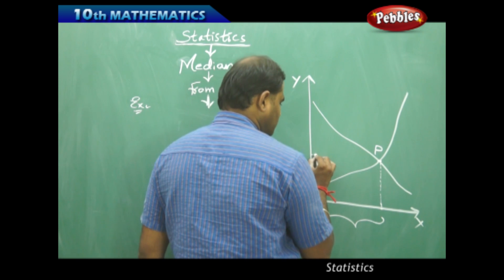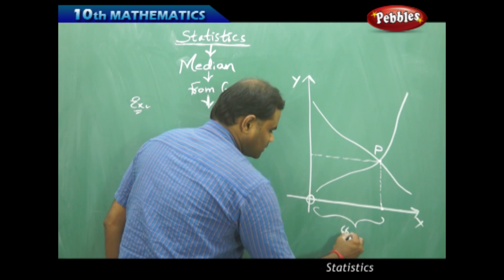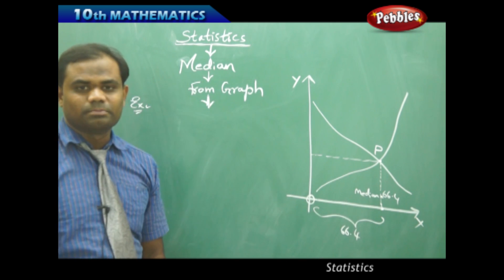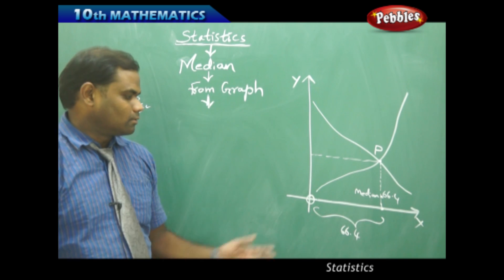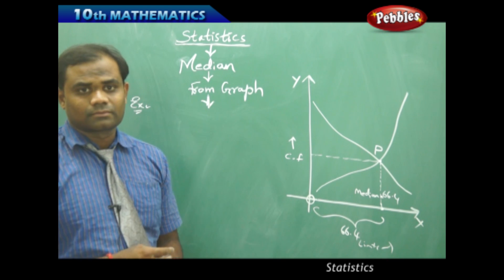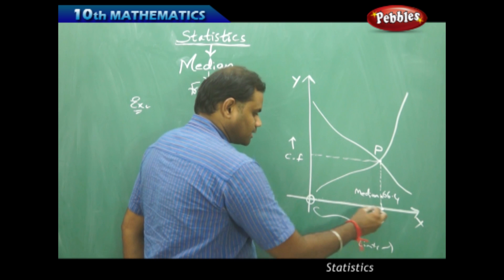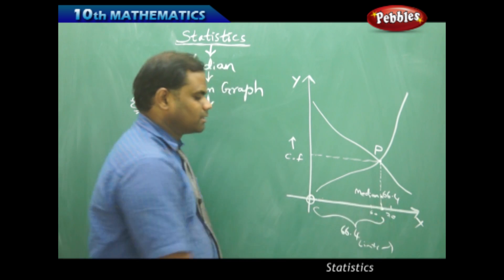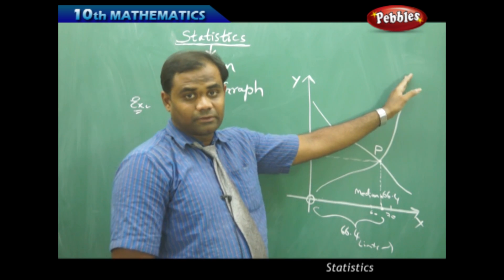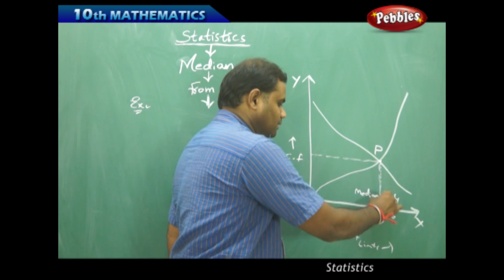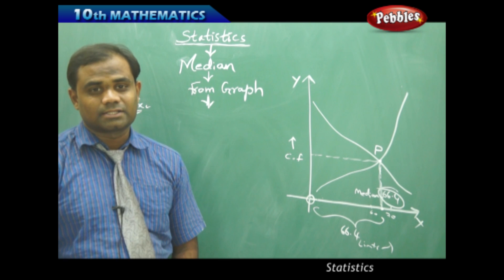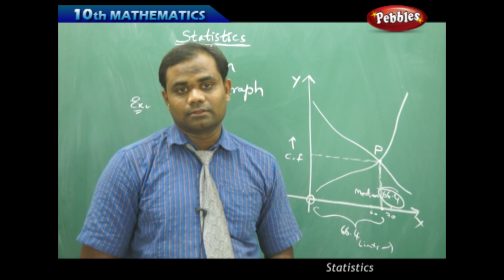Correspondingly, that point has an x-coordinate from which I identify that the median is 66.4. So the median in this case, calculated from the ogive curves using cumulative frequency with limits, is approximately 66.4 to 66.5, taken under the range of 60 to 70. This is how we sketch the less than ogive curve and greater than ogive curve, find the point of intersection graphically, and use the x-coordinate to decide the median of the given data.